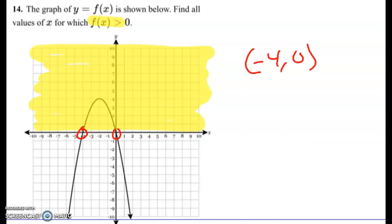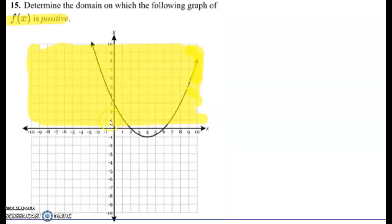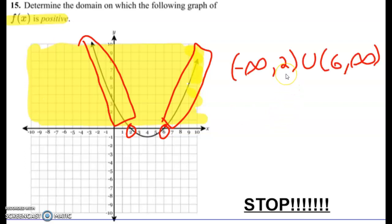Let's look at one more. We've got this shape here and it says determine the domain for which the following graph of f of x is positive. So f of x is positive in the top part of the graph. We're going from negative infinity down to two, and then from six to infinity. So this is negative infinity to two, union, positive six to positive infinity.